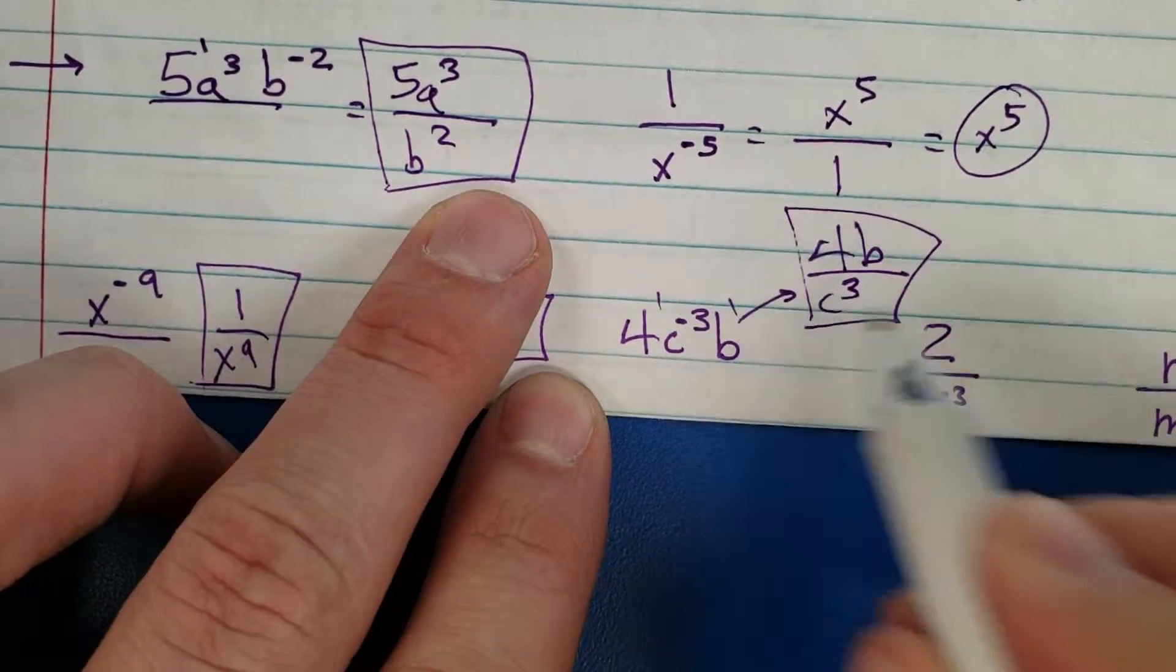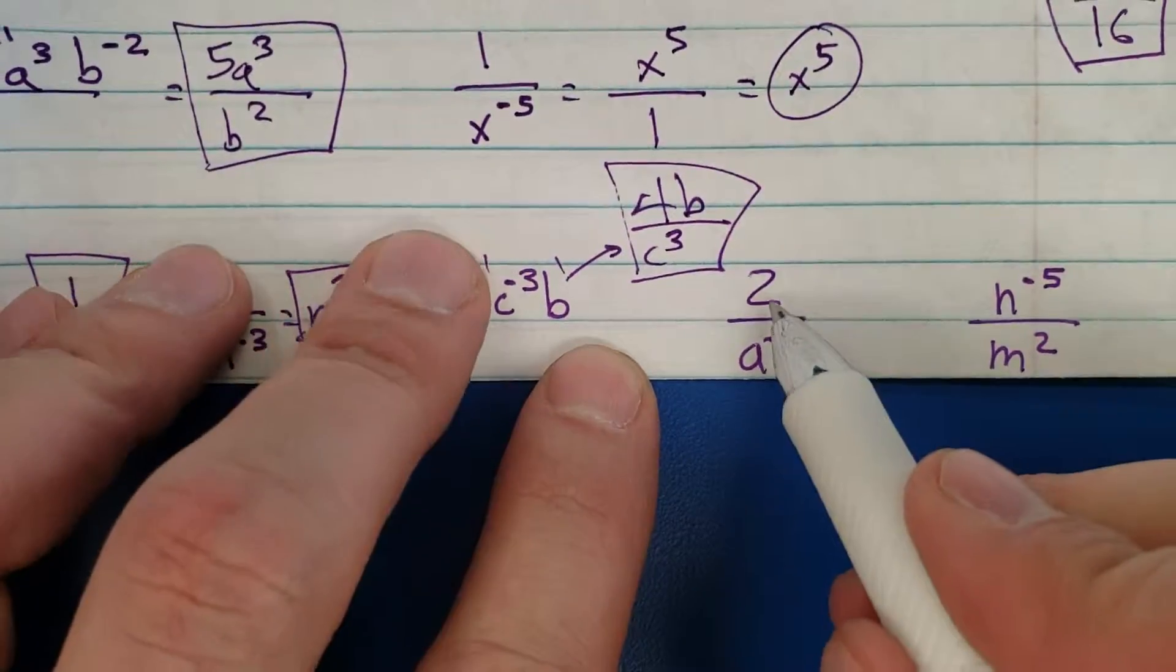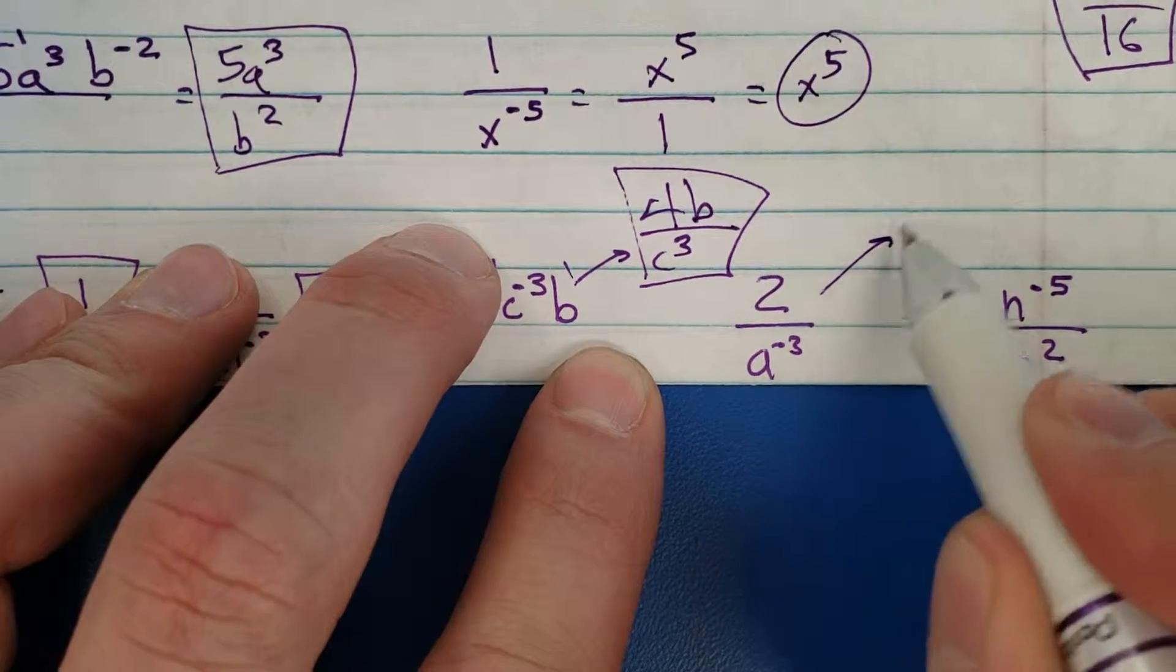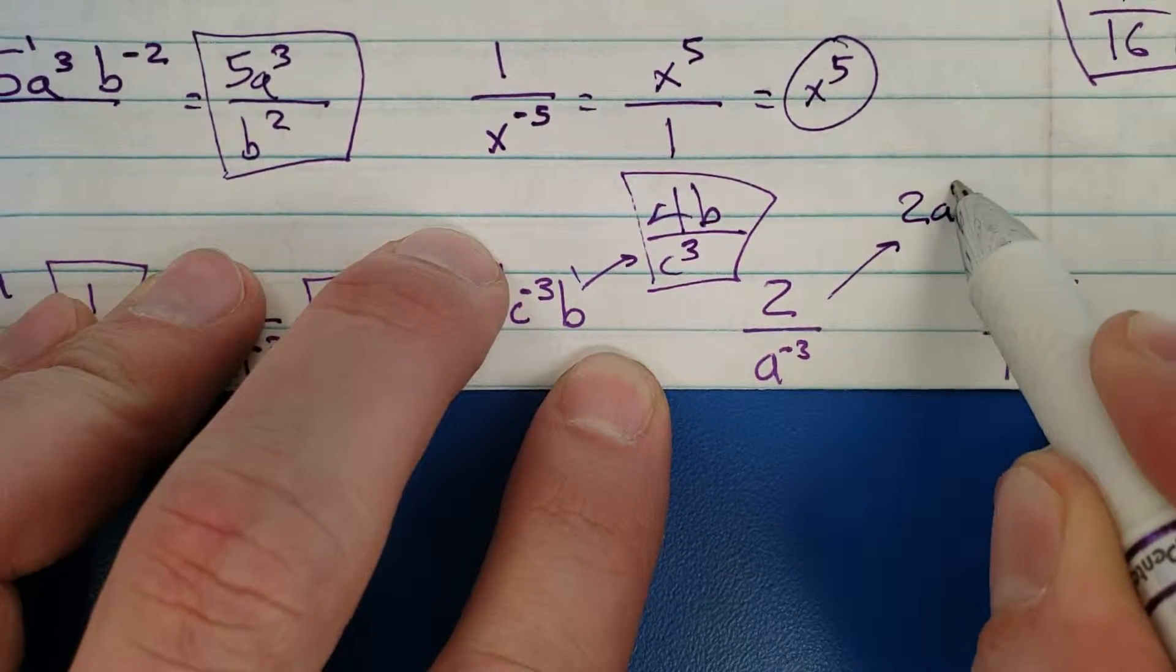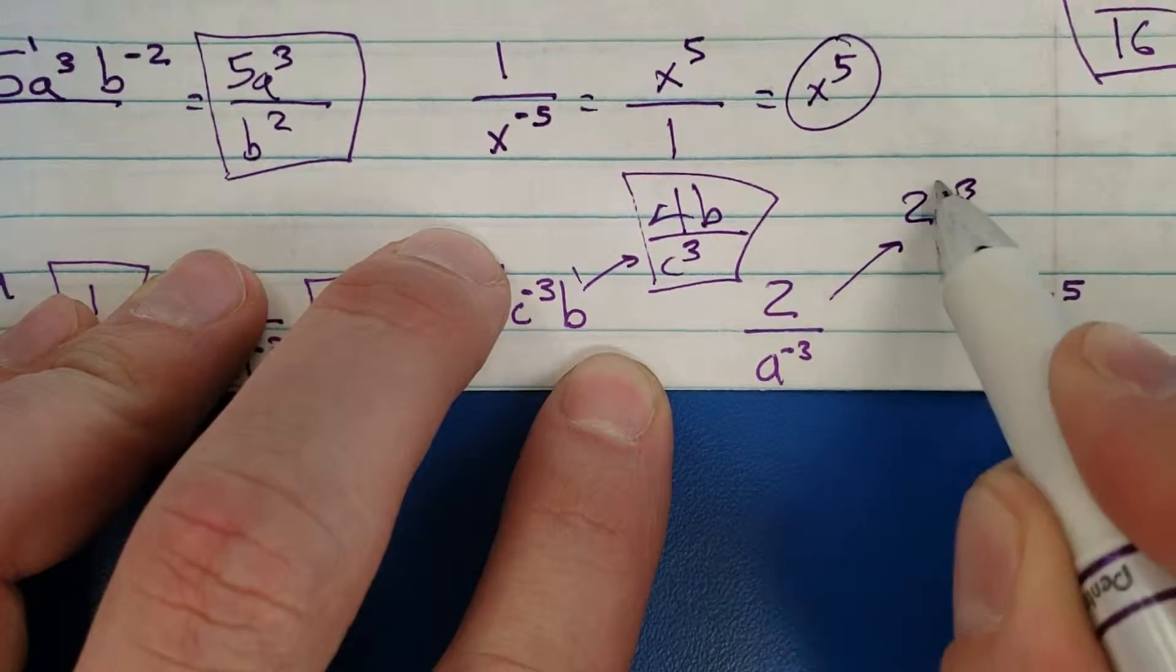Okay, two, you're good, you're positive, you stay up top. You don't want to be down there, you're negative, move you up top. Done. Nothing left over in the bottom, so you didn't need to write anything on the bottom.